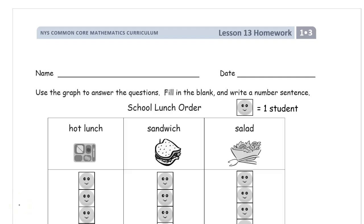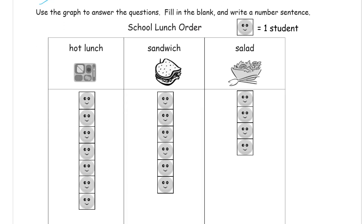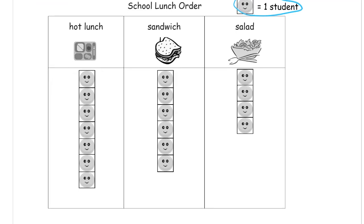Welcome to the homework for lesson 13 — this is module 3 of grade 1. Here's where you write your name. Use the graph to answer the questions, fill in the blank, and write a number sentence. Here's our key: the smiley face is one student. We can look at this and see hot lunches: 1, 2, 3, 4, 5, 6, 7 students. Sandwiches: 1, 2, 3, 4, 5, 6 sandwiches.